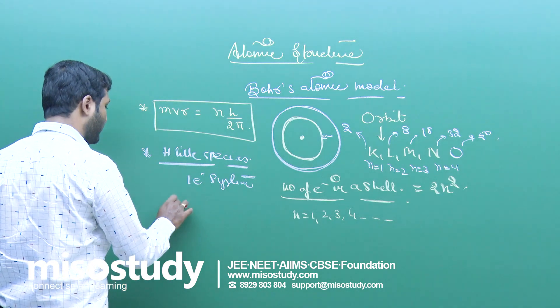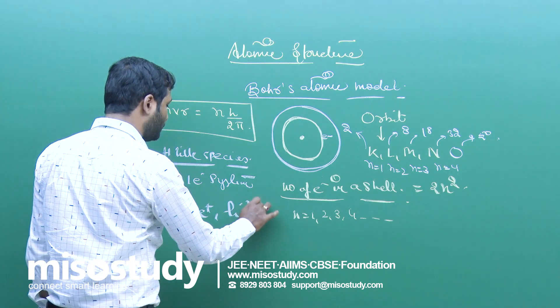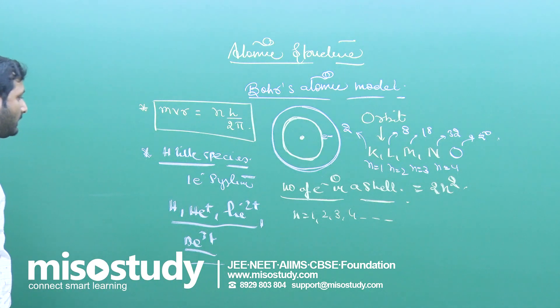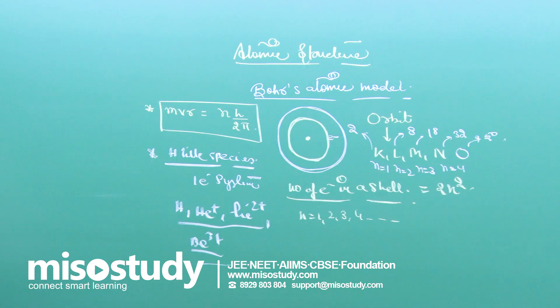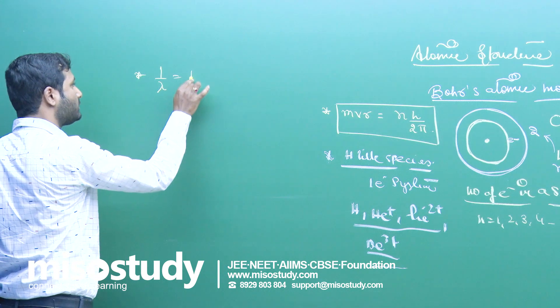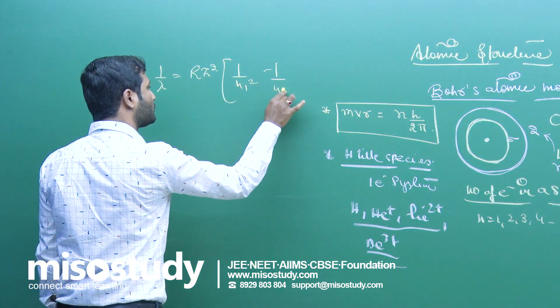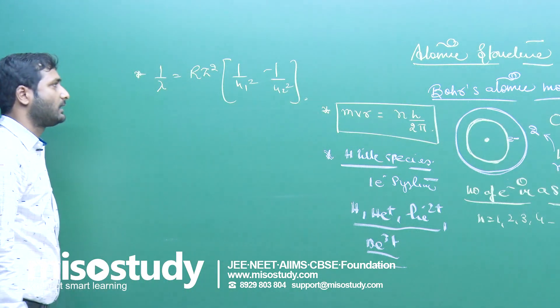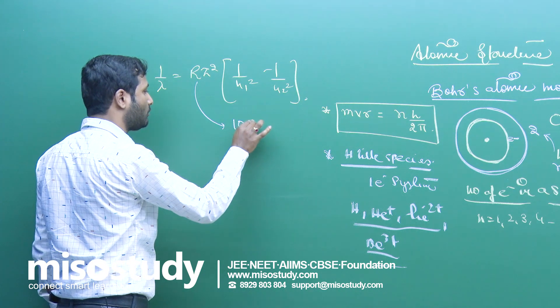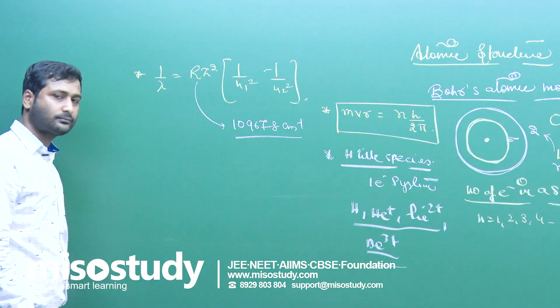There comes hydrogen-like species like H, helium plus, lithium 2 plus, beryllium 3 plus. These are the one electron systems. It could not explain the multi-electron system. In case of hydrogen-like spectrum, we have the formula: 1 upon λ equals R z², 1 upon n1² minus 1 upon n2². R is Rydberg constant. The value of R is 109678 per centimeter.